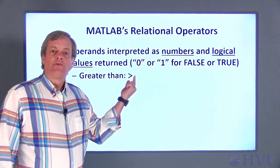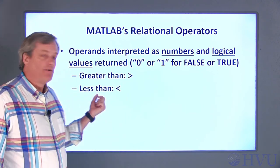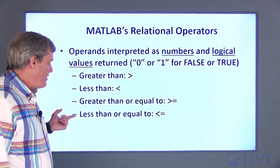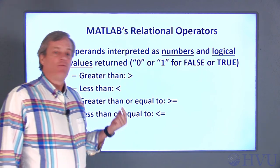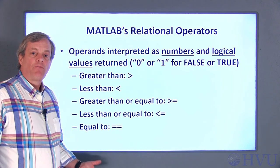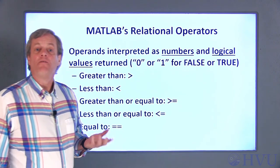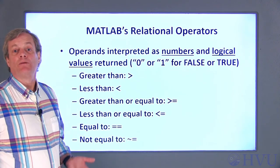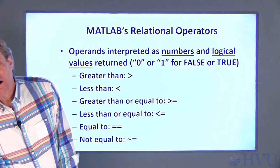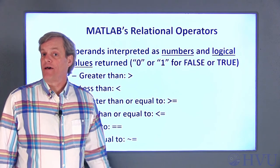Now I'll give you the list of MATLAB's relational operators. For these operators, the operands are interpreted as numbers and the output is a logical true or false — a one or a zero. In MATLAB, the greater-than operator is represented by the typical mathematical symbol >. Less than is implemented with the < symbol. Greater than or equal to and less than or equal to are implemented with >= and <=. The equality operator, used to check whether two numbers are equal, is two equal signs ==. Finally, the not-equal operator is a tilde followed by an equal sign ~=. All of these operators have the same precedence and are evaluated after all mathematical operators.